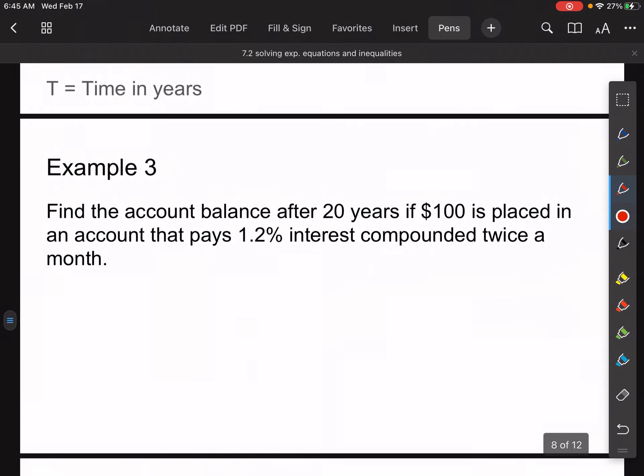It says find the account balance after 20 years of $100, placed in an account that pays 1.2% interest, compounded twice a month. So we have the final amount, A, equal to the original principal, $100, times 1 plus the rate as a decimal, 0.012, all divided by N. So here's where you've got to be careful. This is twice a month, so two times a month, there's 12 months in a year. Therefore, N is compounding 24 times in a year. Twice a month means 24 times in a year. So we take it over 24.